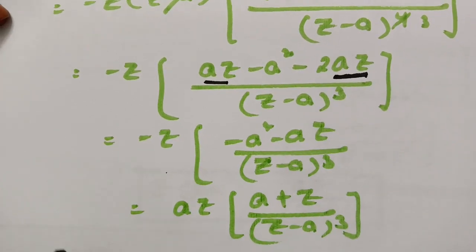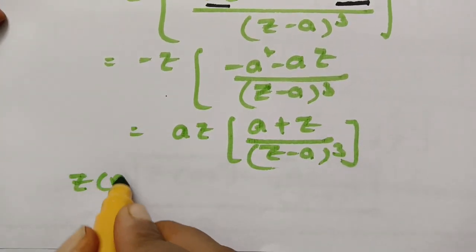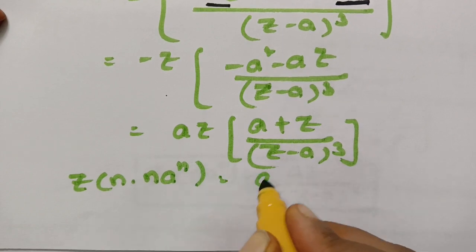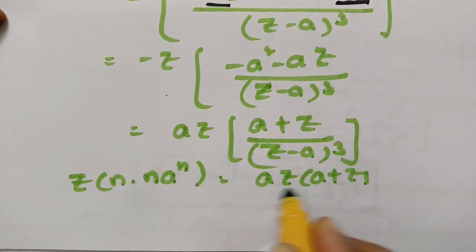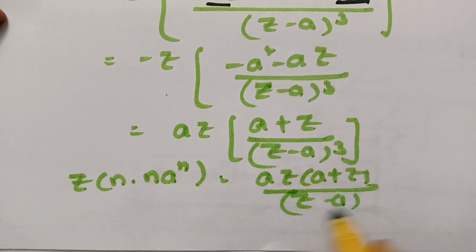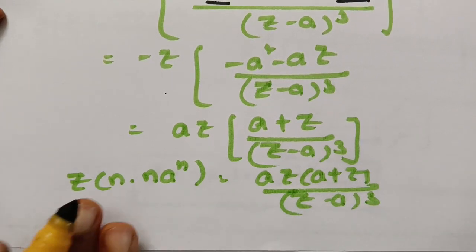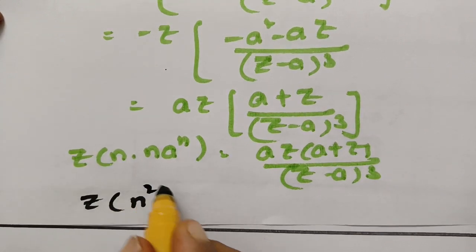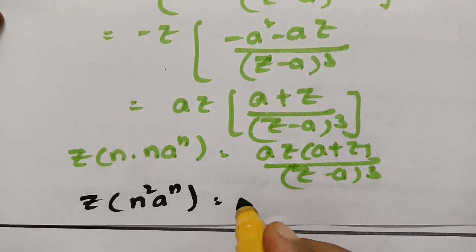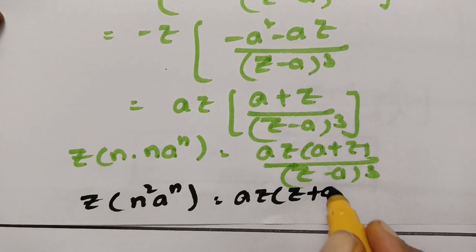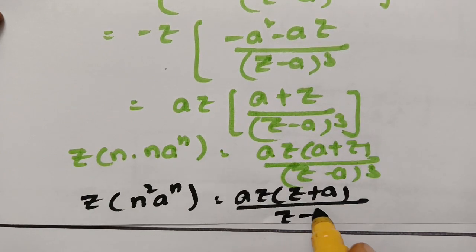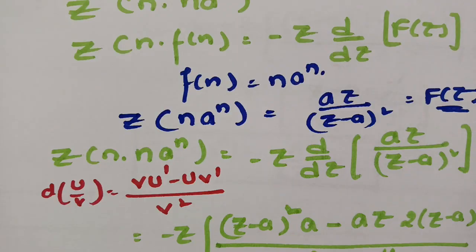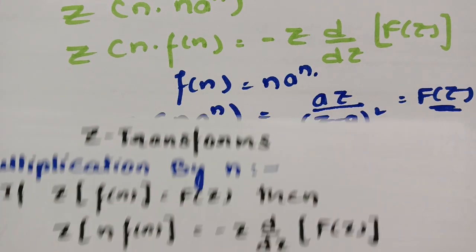Therefore, the final answer is Z{n²·aⁿ} = aZ(Z+a)/(Z−a)³. This is how we solve using the multiplication by n property, and hopefully you have clarity on this.